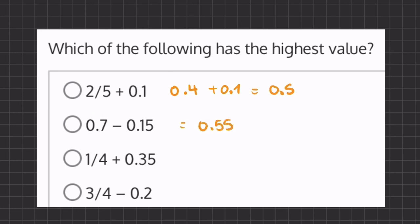And our third one, 1/4 is like it's saying 0.25 in decimal form plus 0.35 will give us 0.60. And our last one, 3/4 in decimal form is 0.75 minus 0.2 will give us 0.55.